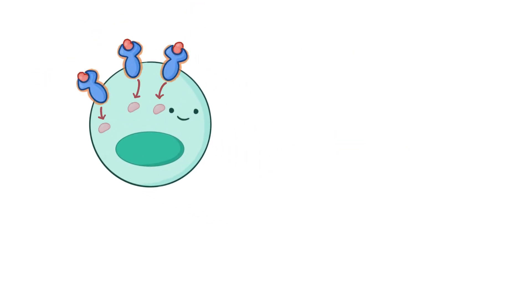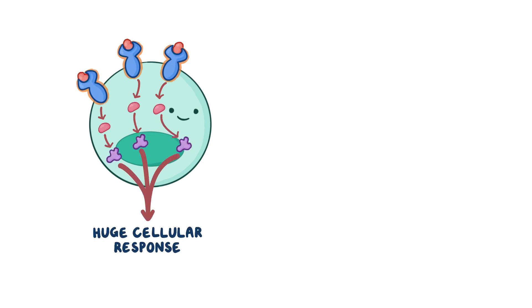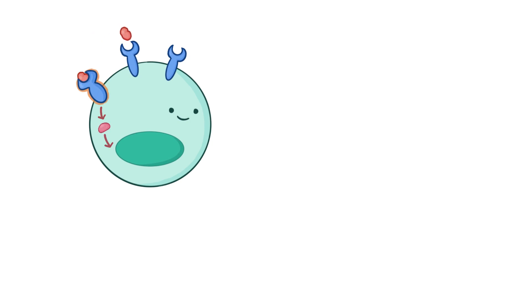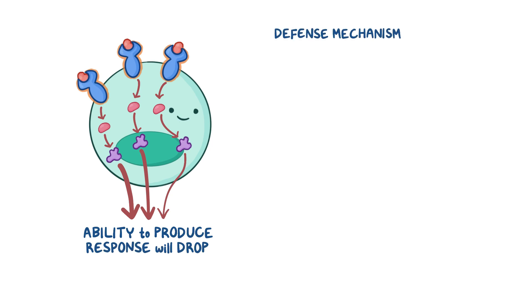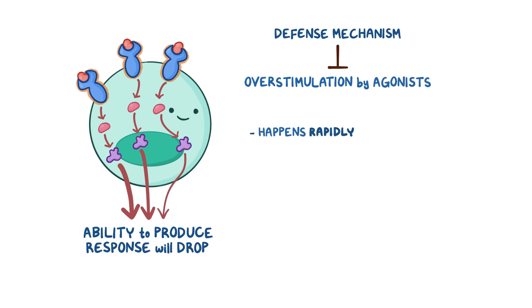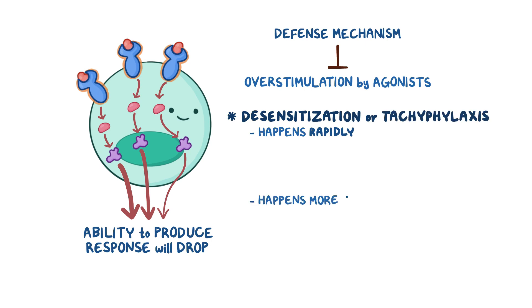If we massively expose the receptors to their agonists, we'll get a huge downstream signal cascade and cellular response. But if we continuously or persistently flood the receptor with the same agonist at the same dose, the ability of the agonist to produce that response will drop. This is a defense mechanism whereby cells prevent their overstimulation by agonists. If this happens very rapidly, like within a few minutes, it's called desensitization or tachyphylaxis. If this happens more gradually, like over the course of days to weeks, it's called tolerance.